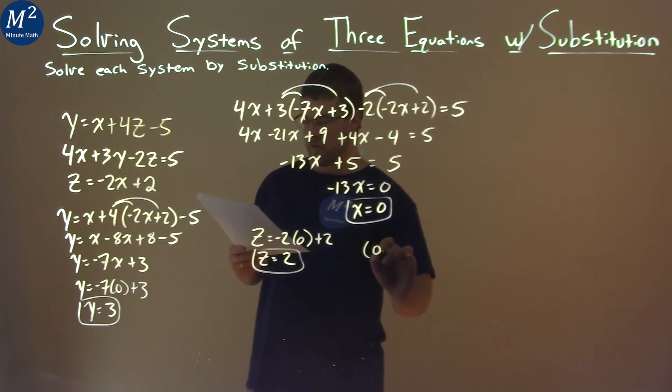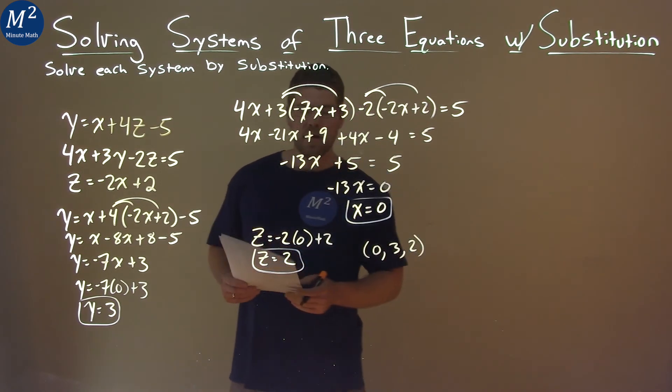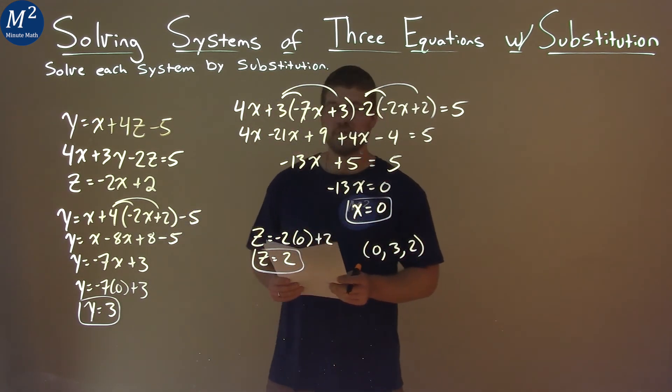So we're going to write the coordinate point 0 for x, 3 for y, and z is 2. And again, that's our final answer: x = 0, y = 3, and z = 2.